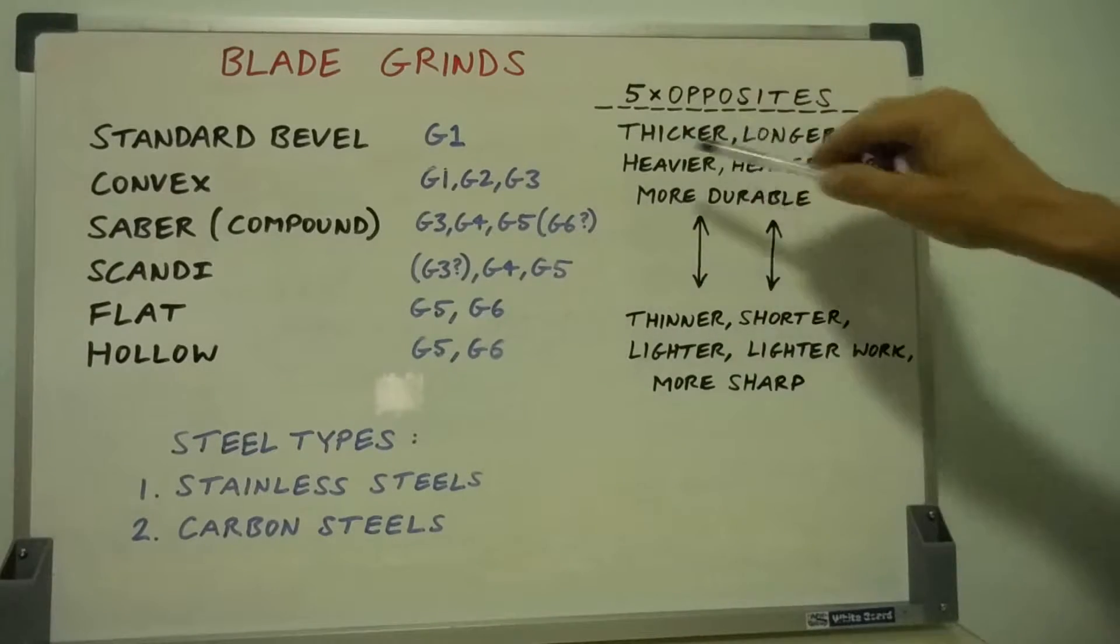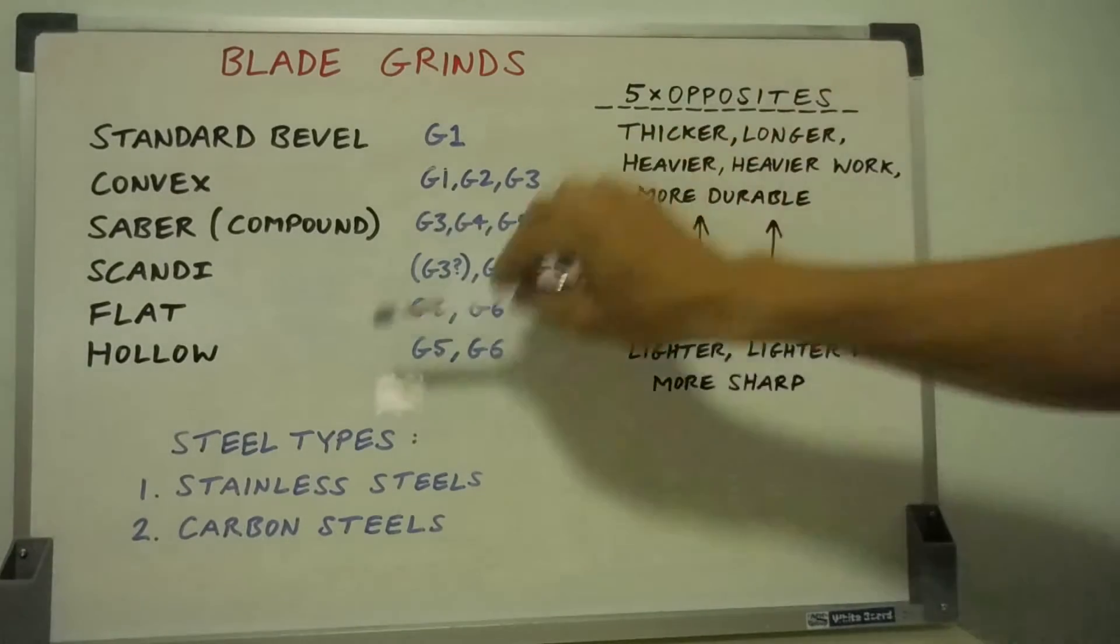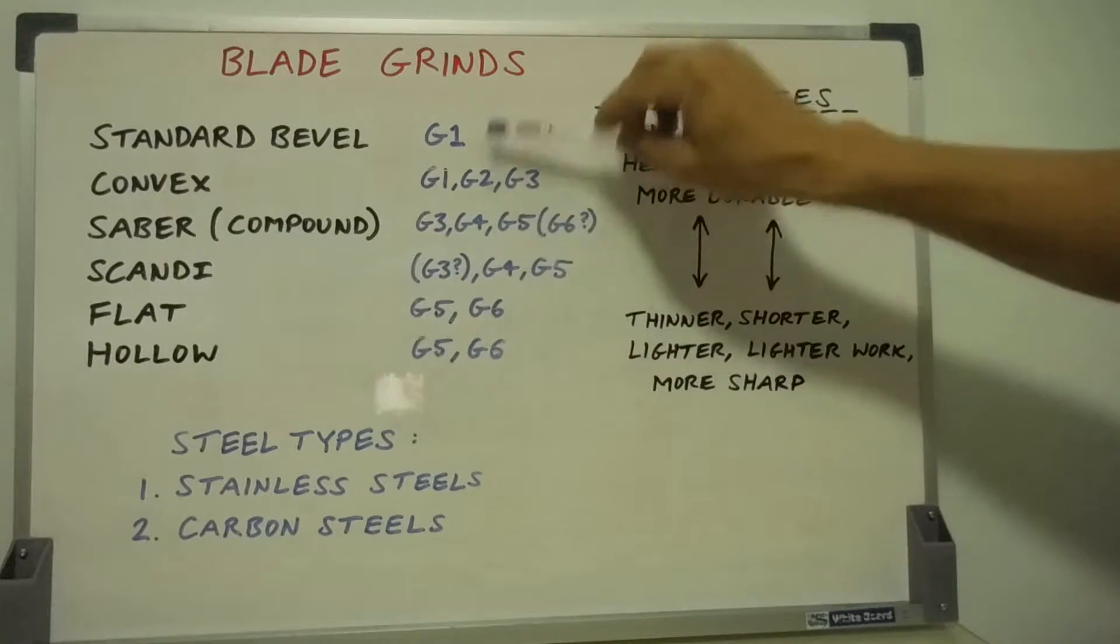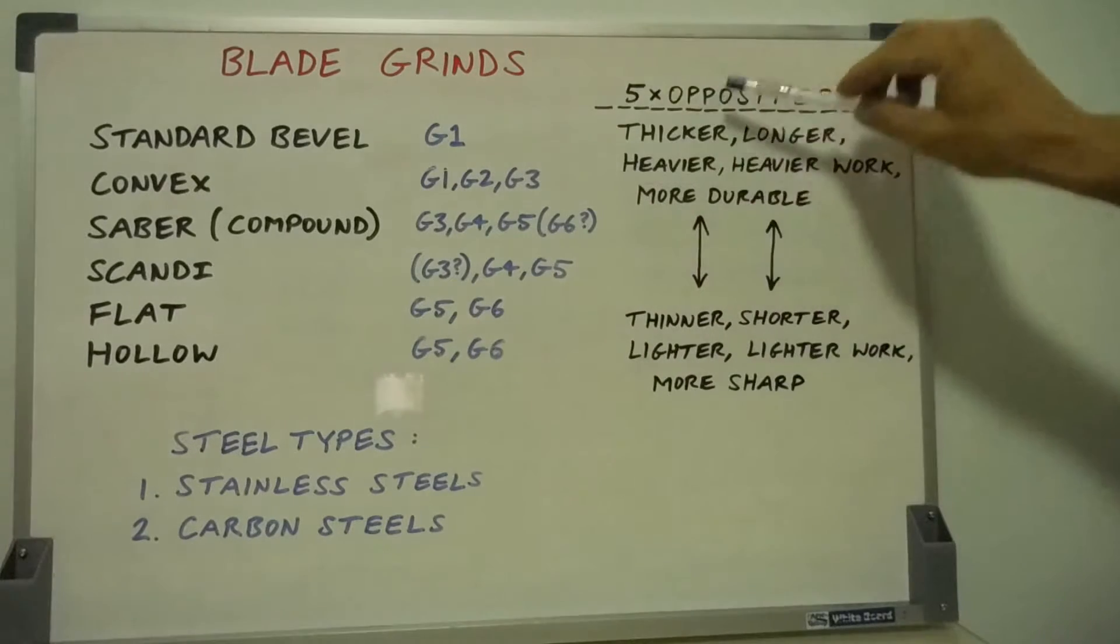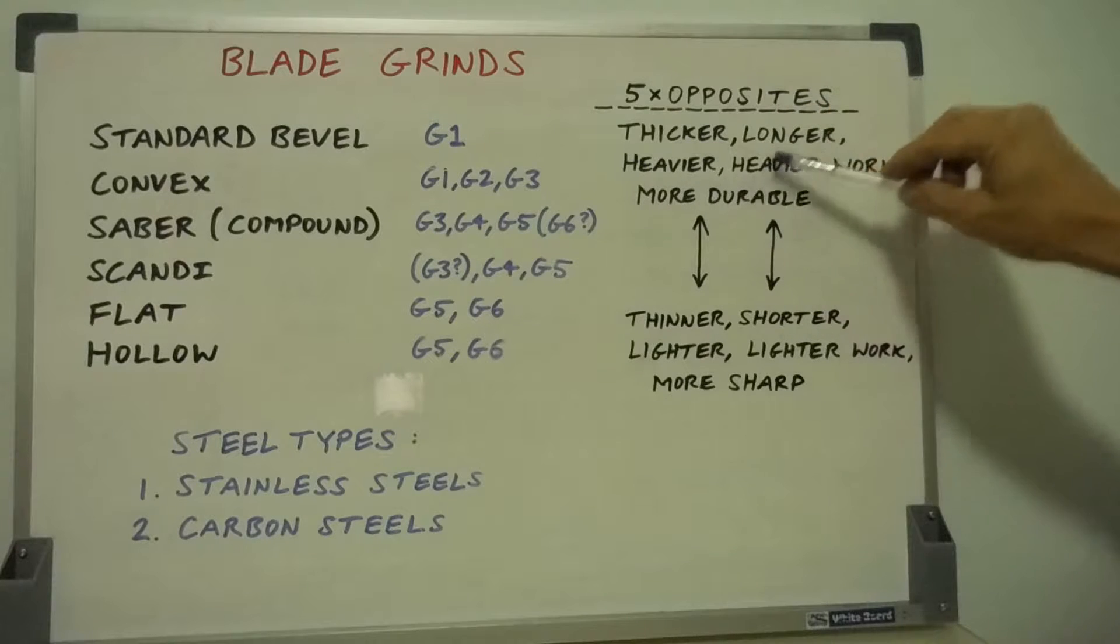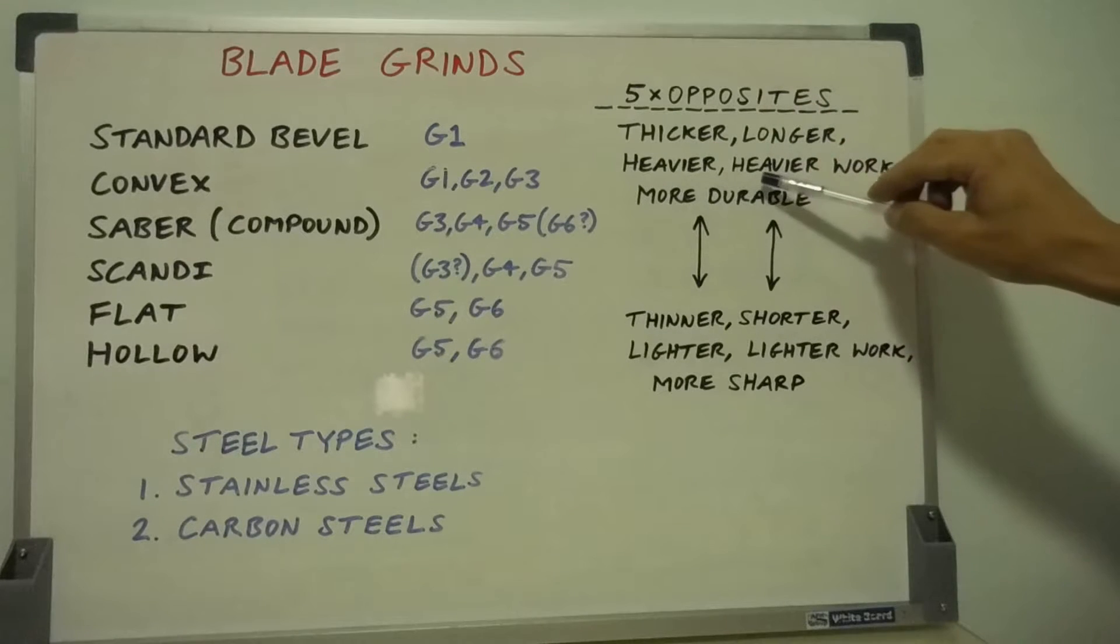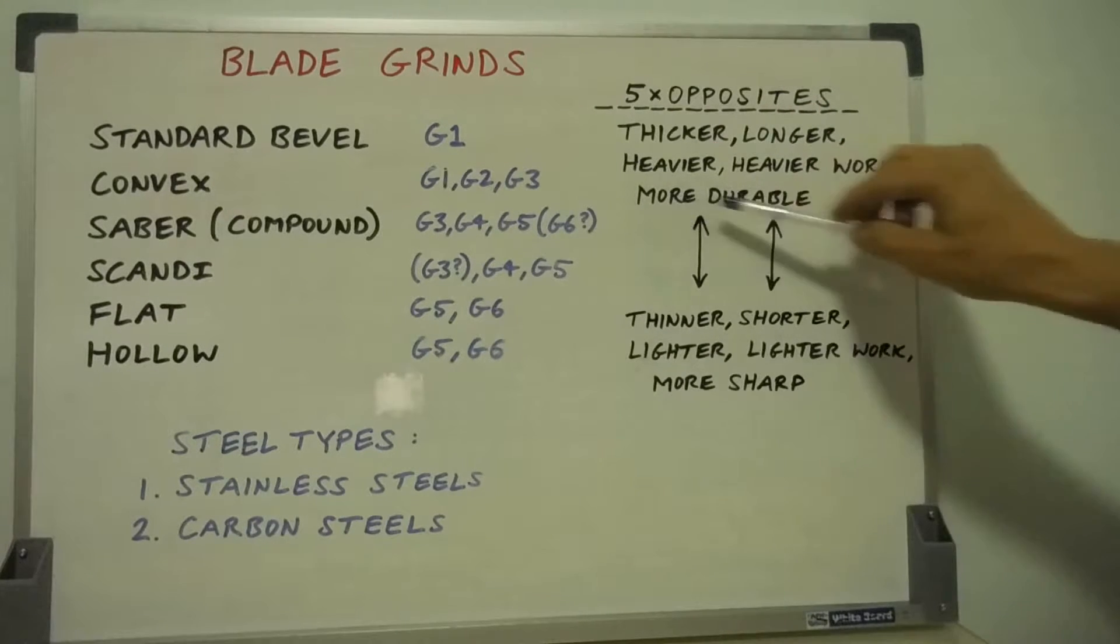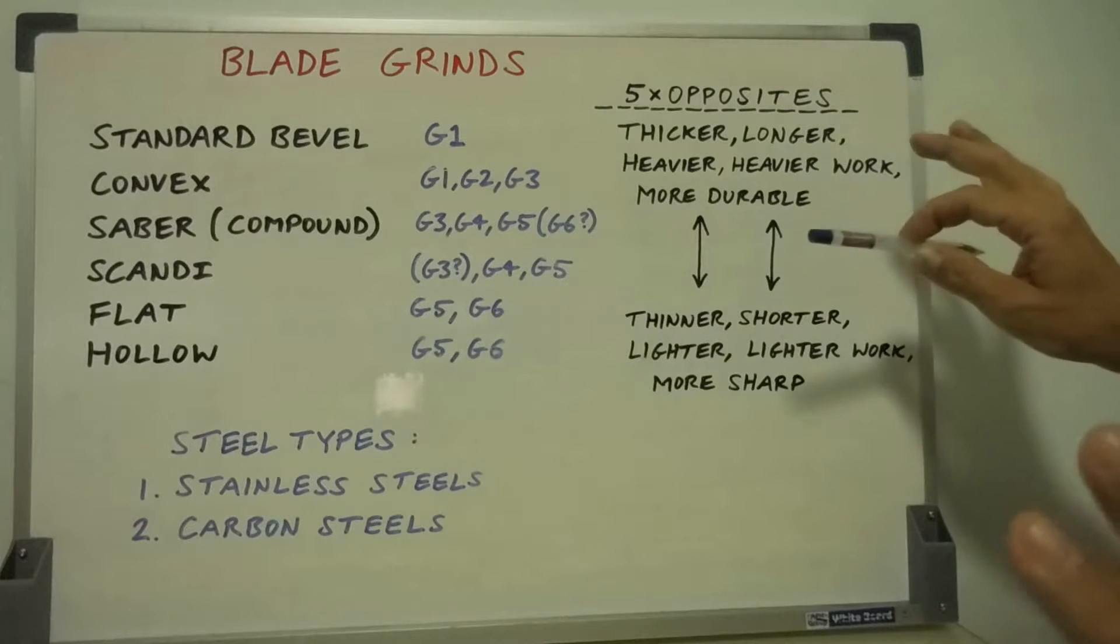I call it the five opposites. The blades, the grinds, should go from the more durable group one, which should be generally thicker, longer, heavier, to do heavier work and more durable edges, and perhaps less sharp.